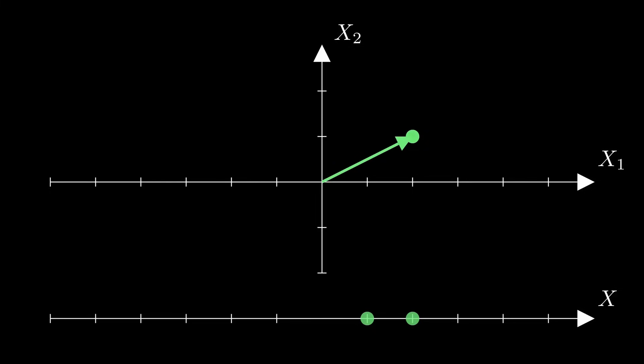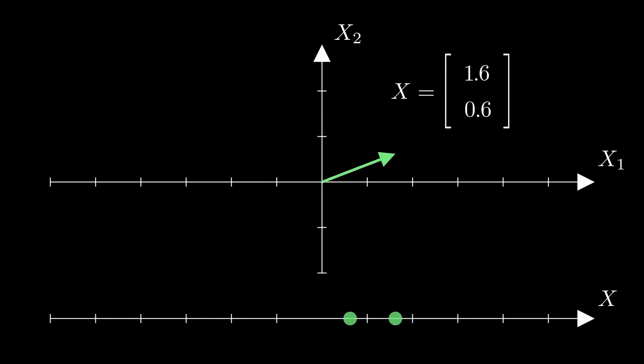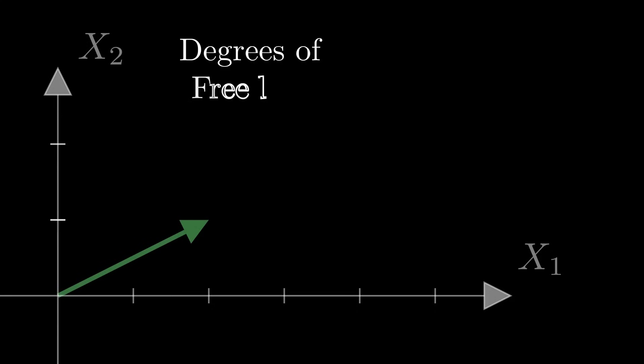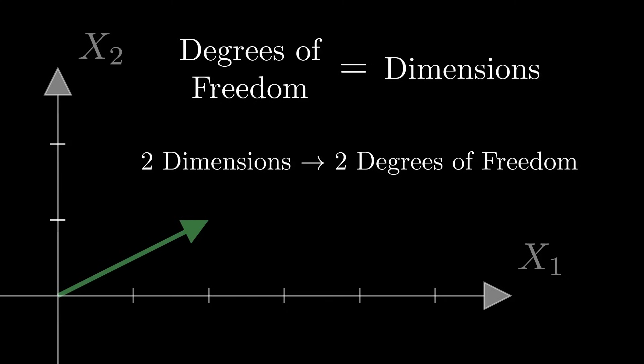As you might have guessed, we're going to represent this point as a vector. Because x is a random variable, each time we sample data points from x, we'll get different values, which means we'll get a different point, which means we'll get a different vector. That's why we can refer to this vector as a random vector. When we talk about degrees of freedom, what we're talking about is the number of dimensions of the space that this vector is free to land in across these different samples. For this vector, if there are two observations, it will always live in this two-dimensional space. Therefore, this random vector has two degrees of freedom — it's got two numbers that are free to vary across different samples.